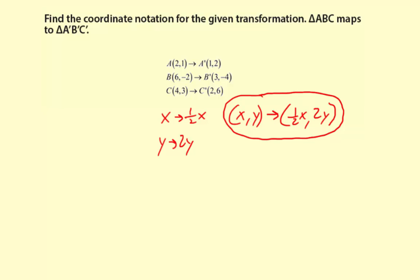Now this is the coordinate notation for the given transformation. And the key here is the notation works for all the given points. If there was even one point that it didn't work for, I would know the transformation I came up with was wrong, and I would have to try something else.